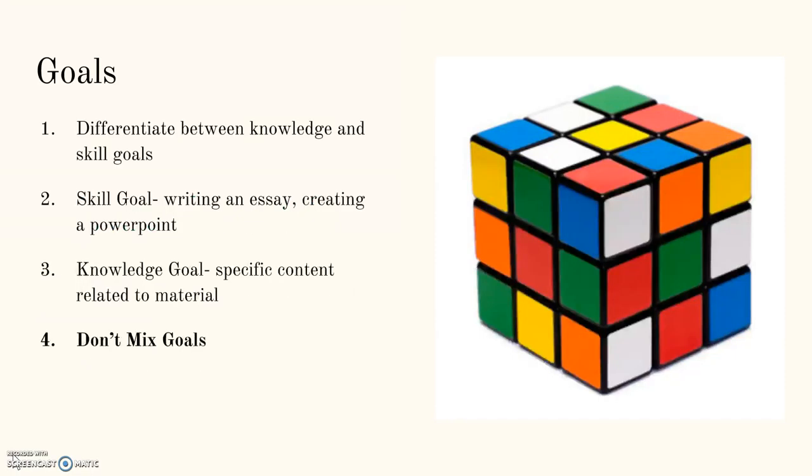One of the goals of UDL is to differentiate between knowledge and skill goals. Skill goals could be like writing an essay, creating a PowerPoint, or putting together a rubric — any actual way to show a skill. Knowledge is the specific content related to the material, what the student actually knows. For example, my lesson is going to be over Lord of the Flies. If I want to understand whether kids understand what happened in the book, but I ask them to write an essay, maybe some kids are really good at writing an essay but don't really know what happened in the book.